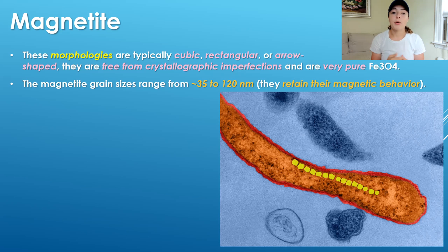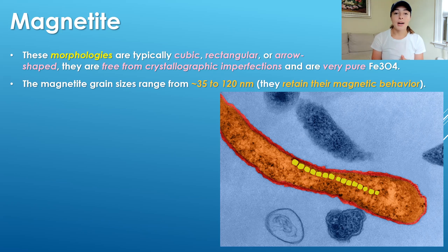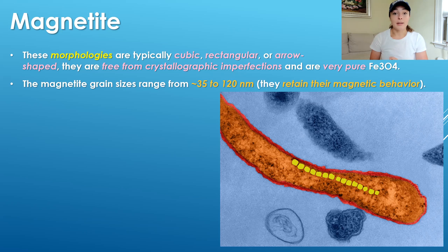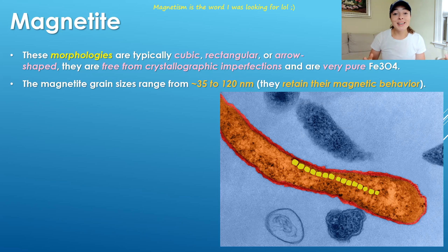Their magnetite grain sizes range from around 35 to 120 nanometers, and they retain their magnetic behavior. I mention this because in the part two video, when we talked about biologically induced magnetite formation, we discussed how grain sizes of that type of magnetite can be less than 30 nanometers, meaning it loses its magnetic behavior at that size. Whereas the magnetite formed by this controlled process does not lose its magnetic behavior, so they can still utilize the magnetism of the magnetite they form in their cell.